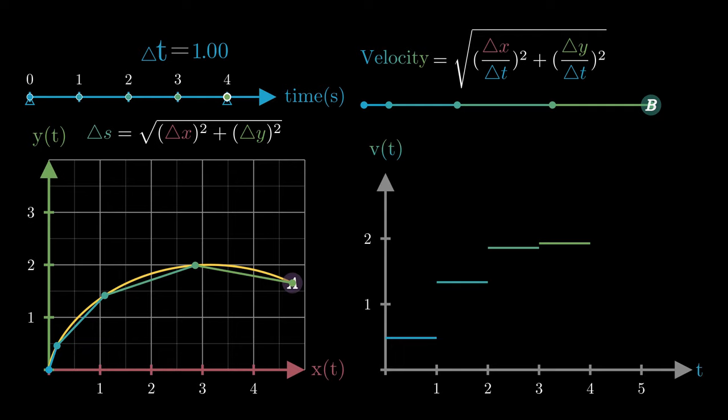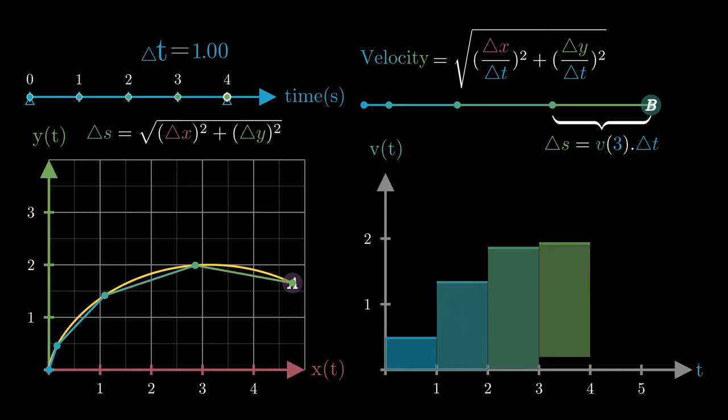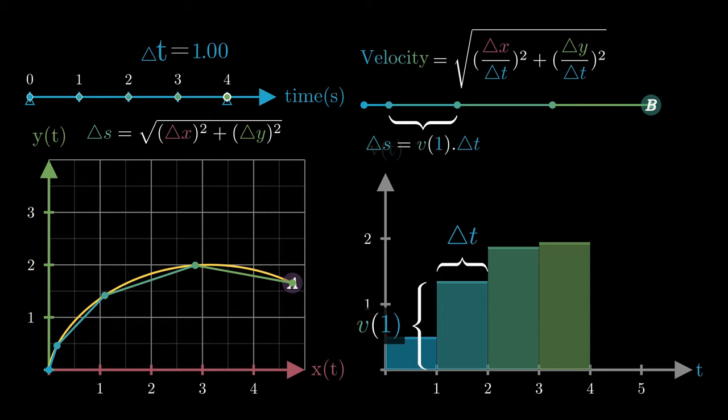Each of these distances traveled by particle B can be expressed as the product of velocity during that interval times delta t. So summing up all these little distances can be seen in a whole different perspective as summing up the areas of rectangles on this velocity graph. The width of each of these rectangles is delta t and the height is given by the velocity during that interval.